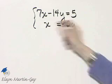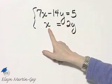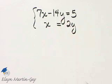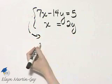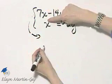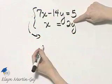Why? Because notice the second equation is solved for x. So I'll rewrite the first equation and instead of x, I'll write what x equals from the second equation.